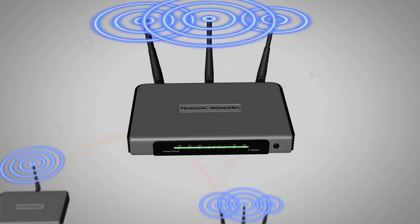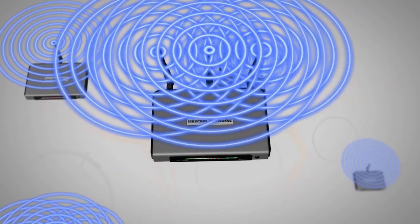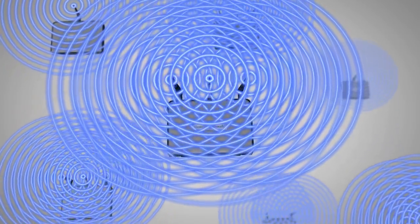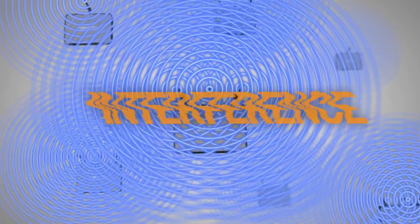Traditional Wi-Fi access points flood transmissions in all directions. Signal that goes anywhere except to the intended receiver is just interference.